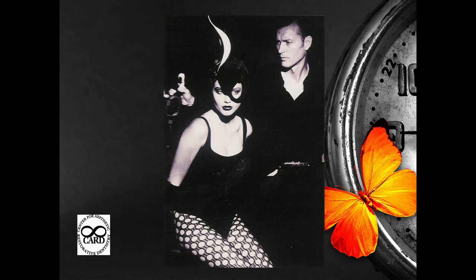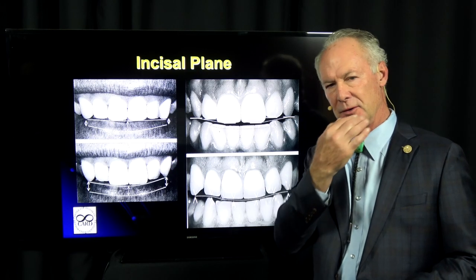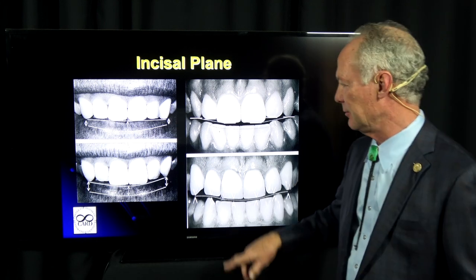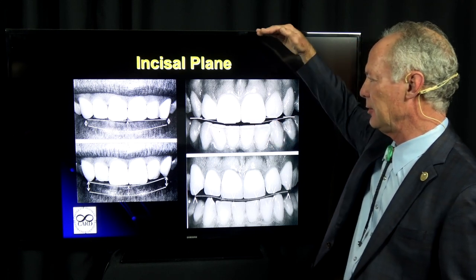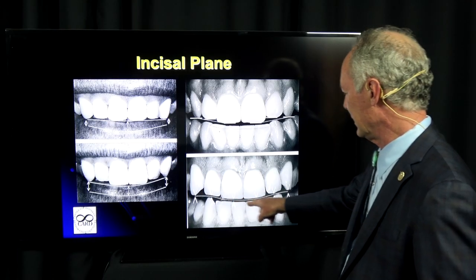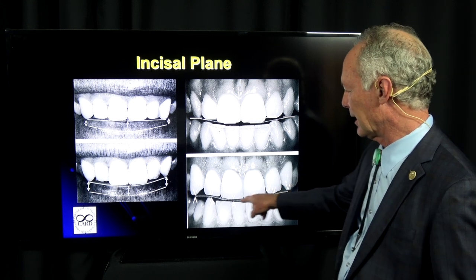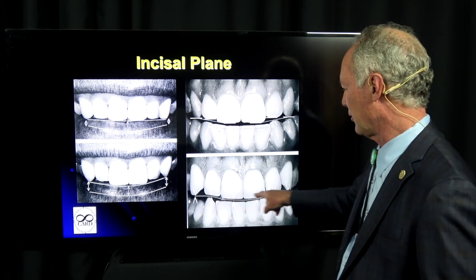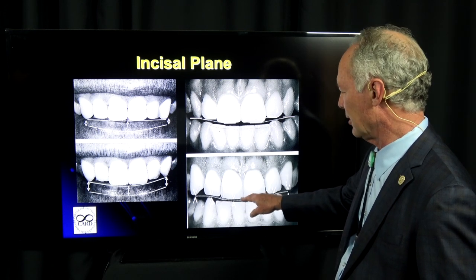The incisal plane of the maxillary anterior teeth should basically be parallel to the lower lip. The incisal plane of the central incisors should be parallel to the pupillary line — a line drawn between the pupils representing the horizon. You would like the incisal plane to make a subtle U, kind of like a banana or a quarter moon.